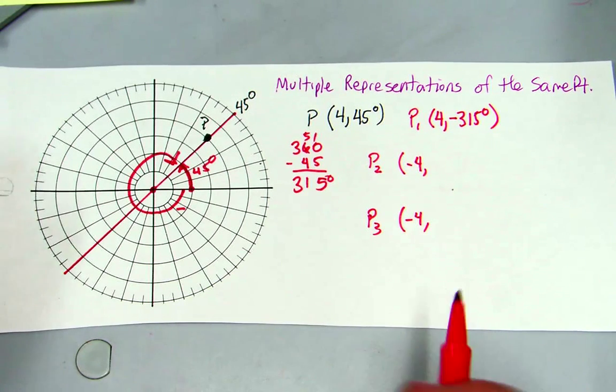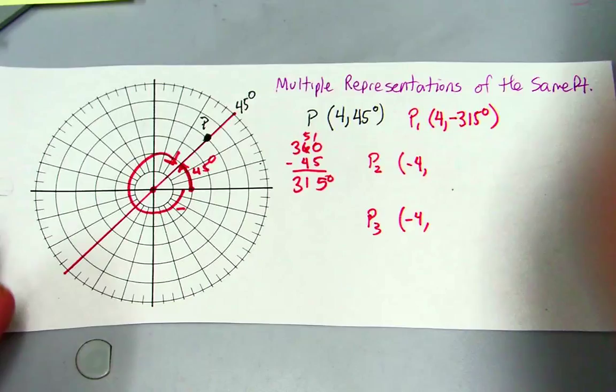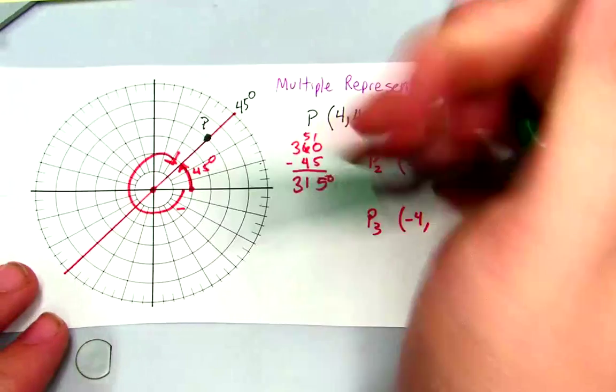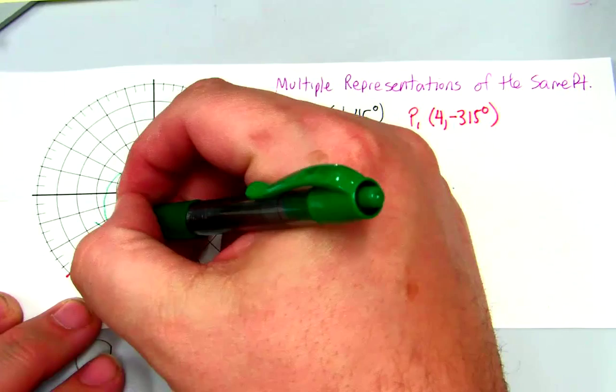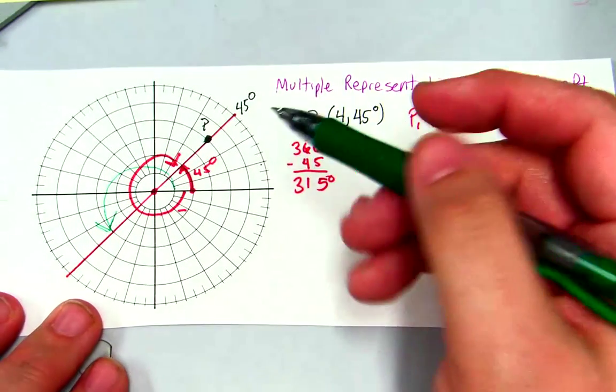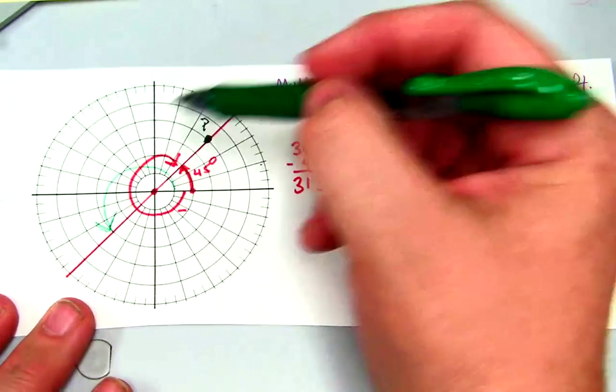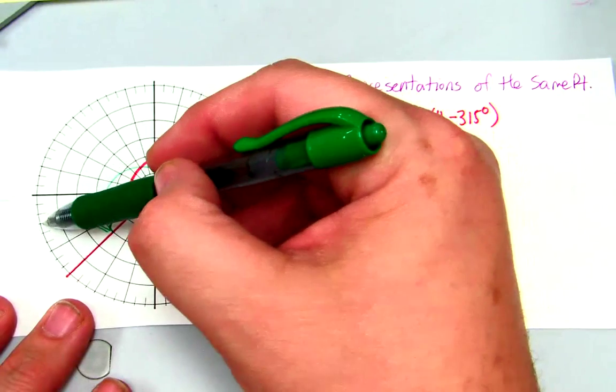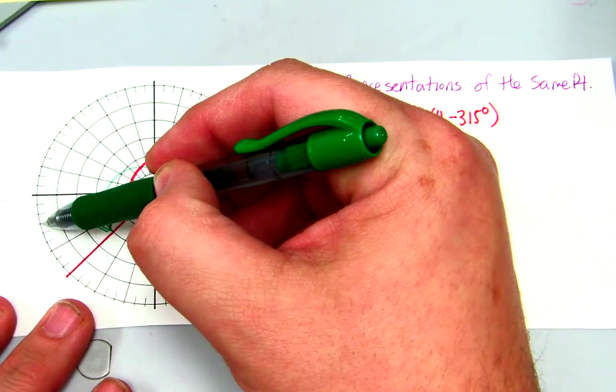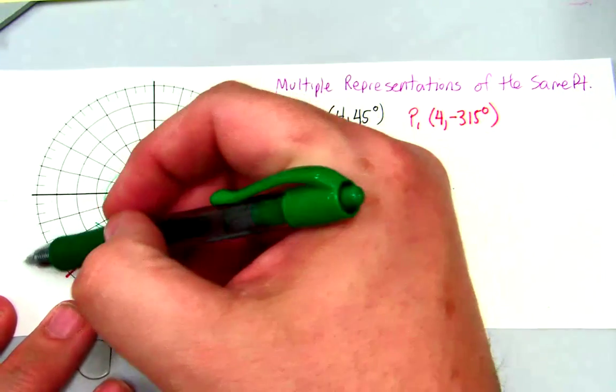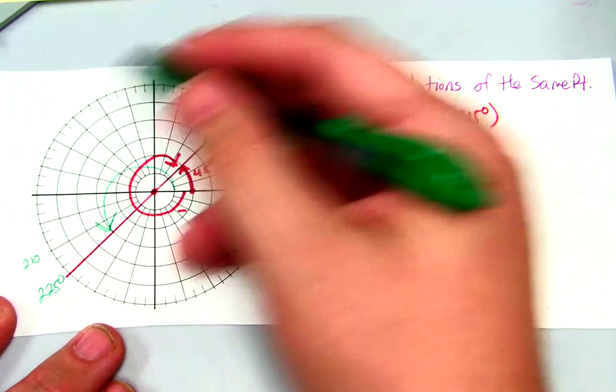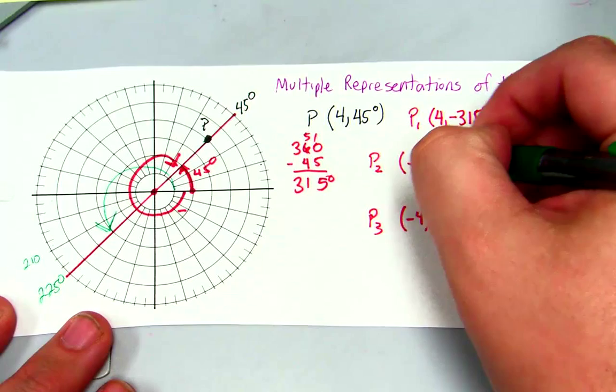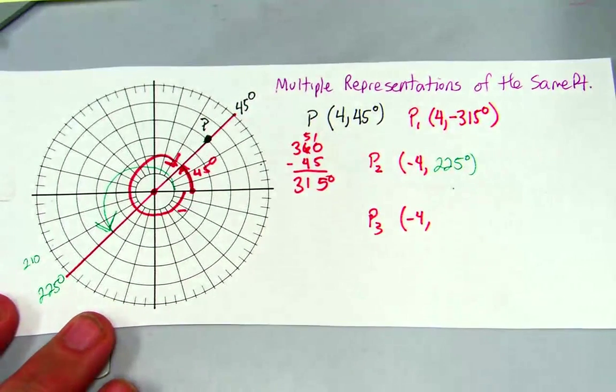So what I need to find, and let's get a different color here so we can see the difference, is I want to get this angle right here. That would be my positive, that's 180, 195, 210, that's 225 degrees. So I could say it's going to be 225 degrees.